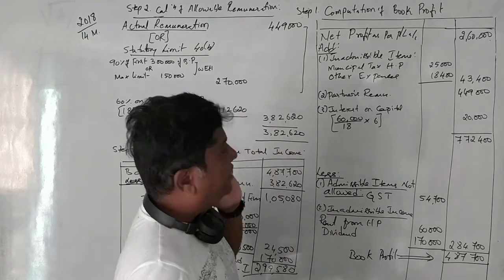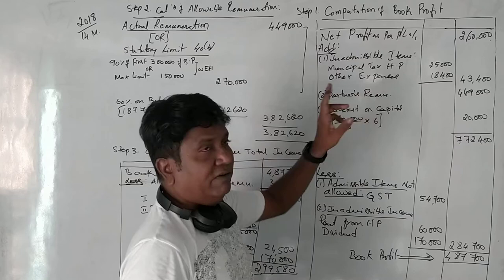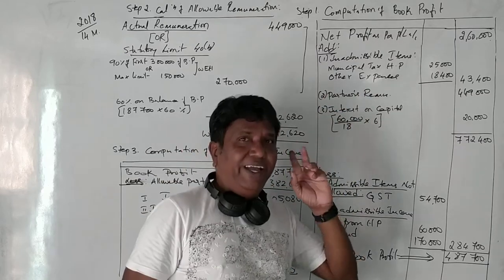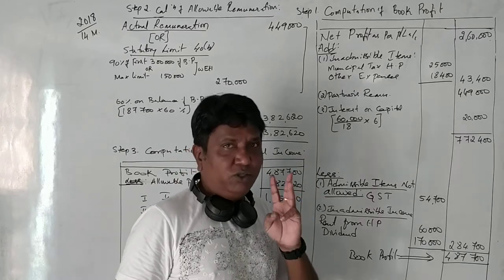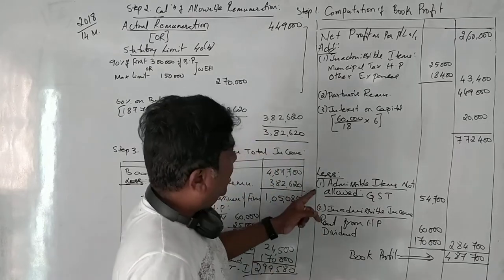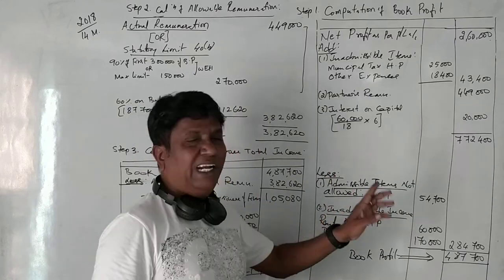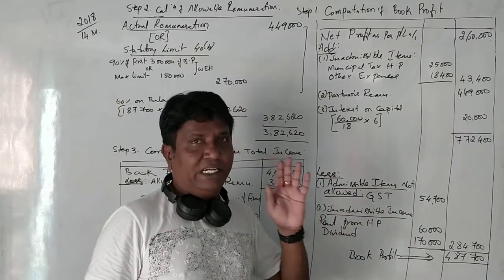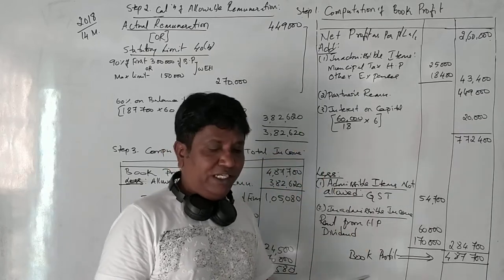Three items is to be added. One is inadmissible items, second one is partners remuneration and third one is in excess of 12% of interest on capital. These three items we need to add and admissible items not allowed, one item we have to deduct and inadmissible incomes also should be deducted. You should know the format so that we can be able to easily solve it.